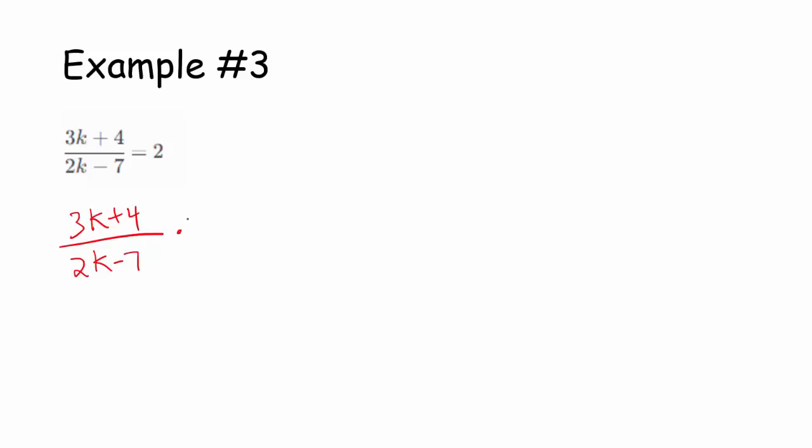I'm going to multiply both sides of the equation by 2k minus 7. So this 2k minus 7, those terms cancel. So we get 3k plus 4 equals 4k minus 14.